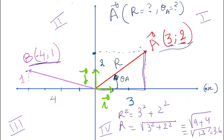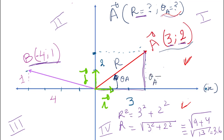The magnitude R we find using the Pythagorean theorem. To find the direction of the vector, if you are located in the first quadrant or the fourth quadrant, just use the arc tangent of y over x of your vector. So in this case, the direction of vector A will be just arc tangent of y_A over x_A.